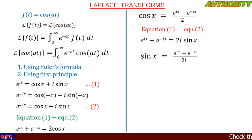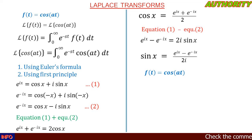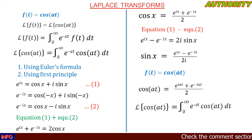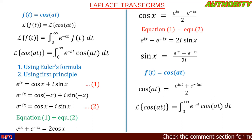Our function f of t is cos(at), so we use the equation cos(x) = (e^(ix) + e^(−ix)) / 2. Since our variable is at, in place of x we write at, giving cos(at) = (e^(iat) + e^(−iat)) / 2. So the Laplace transform of cos(at) is the integral from zero to infinity of e^(−st) times cos(at) dt.